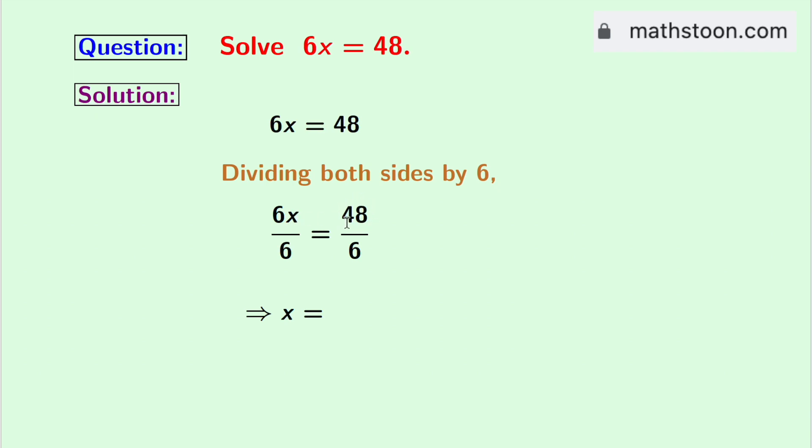And on the right hand side, we will write 48 as 6 times 8. And in the denominator, 6 remains same. Again see that 6 times 6 get cancelled, so we are left with 8.